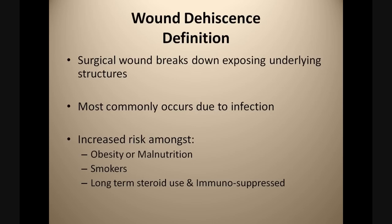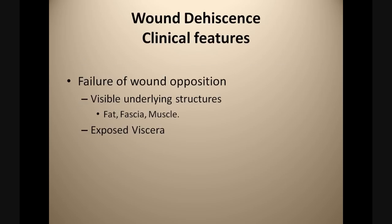Wound dehiscence is when a surgical wound breaks down exposing underlying structures. Most commonly this occurs secondary to infection, and there are increased risk factors amongst those who are obese or malnourished, lifelong smokers, on long-term steroid use, and those who are immunosuppressed. When we examine our patient we observe features of failed wound opposition, and there may be underlying structures visible such as fat, fascia or muscle, and in more extreme cases exposed abdominal or other viscera.